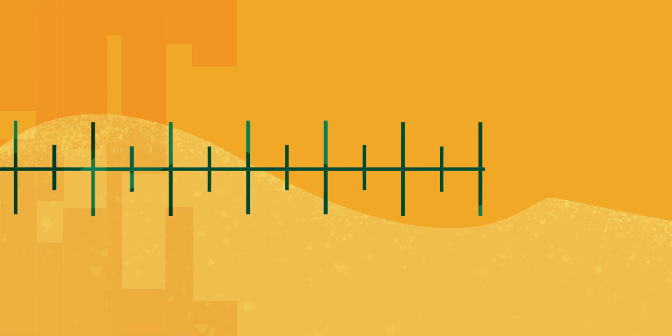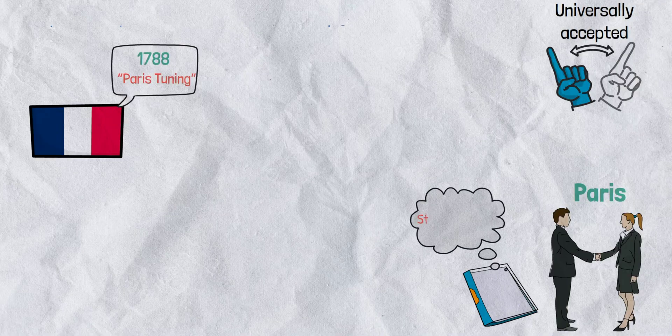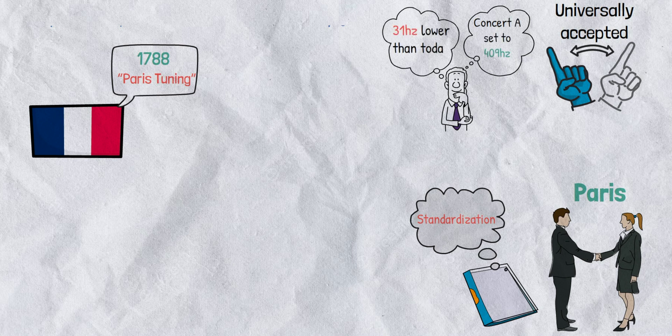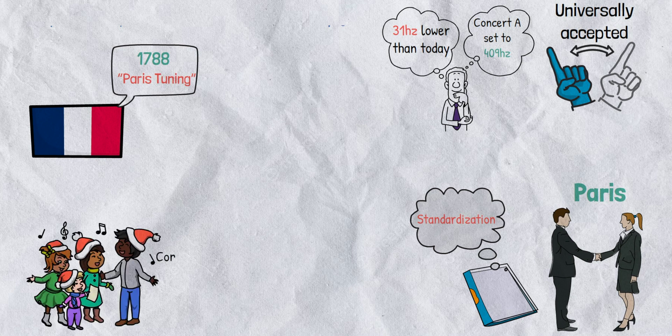How original. It wasn't universally accepted, and there's little documentation of the details of this standardization. The tuning they set would have made concert A set to around 409 hertz, which is 31 hertz lower than today. As the 1800s began, most musicians agreed that A was somewhere in the range of 415 hertz, but nothing was set to standardize it.